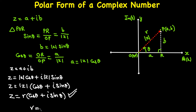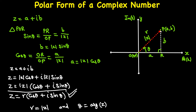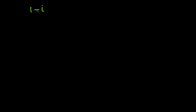This is the polar form of a complex number: Z equals R(cosine theta plus iota sine theta), where R equals the modulus |Z|, which is the vector OP, and theta is called the argument of the complex number Z. In problems, they will give you a complex number in standard form and ask you to write it in polar form — let's do two examples.